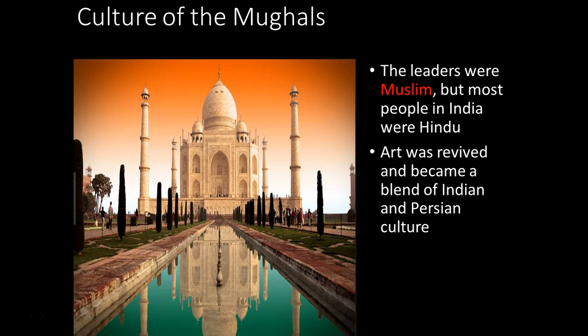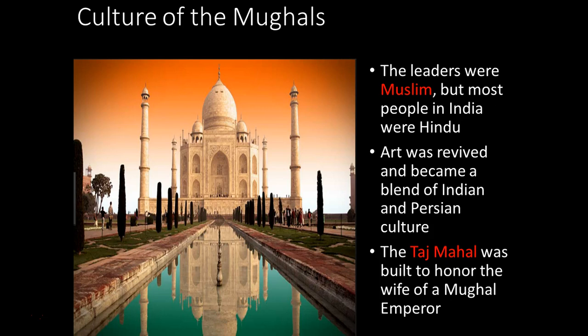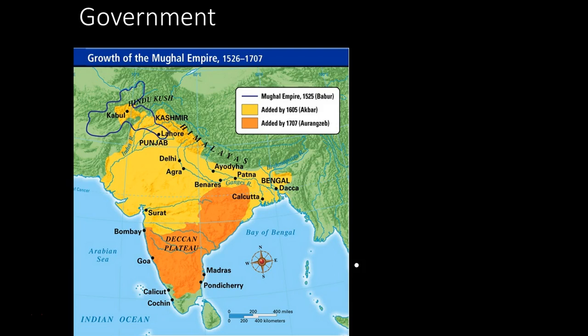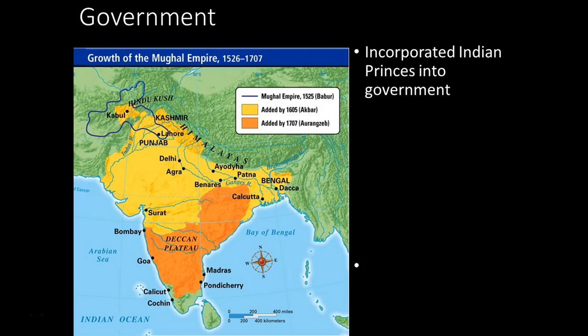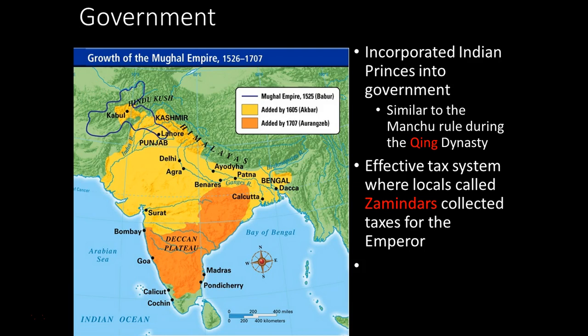The Taj Mahal is a good example of building cultures together. To govern, the Mughals gain favor from Indian princes, giving them important government positions — similar to what the Qing did. They use the zamindar system to collect taxes, functioning like a tribute system where collectors bring revenue back to Akbar or whoever the ruler is.